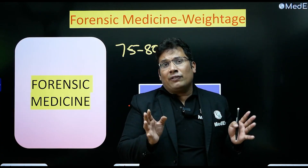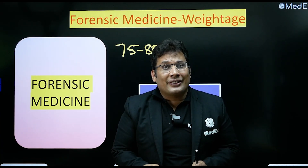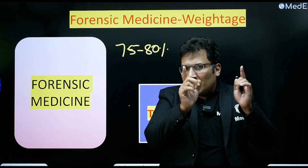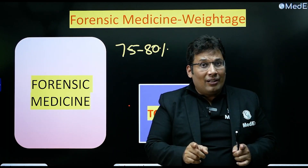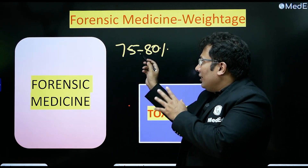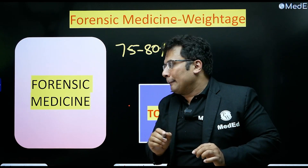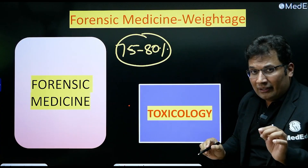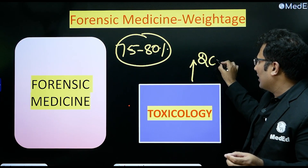Before studying forensic medicine, you must know the weightage of different chapters in relation to the university exam. It differs from one state to another, but in general, as per the CBME curriculum, 75 to 80 percent of the questions come from forensic medicine, and around 20 to 25 percent come from toxicology.